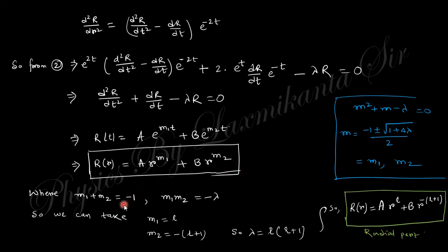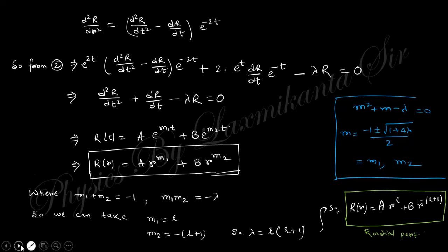The important thing here is that the product of the two roots equals negative lambda and the sum equals negative 1. If we take M1 = L and M2 = -(L+1), both conditions are satisfied. We write the radial solution as A·R^L + B·R^(-(L+1)), choosing L and L+1 specifically so that this form will help in finding the Legendre polynomial in the upcoming solution.